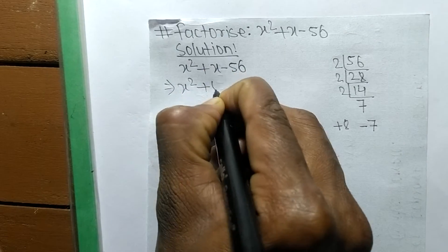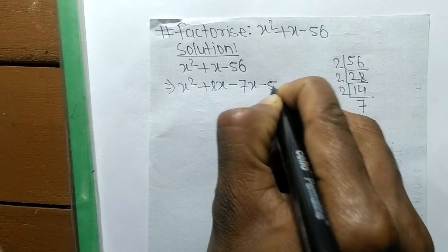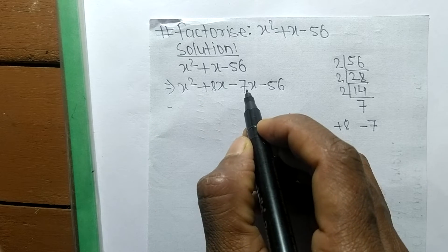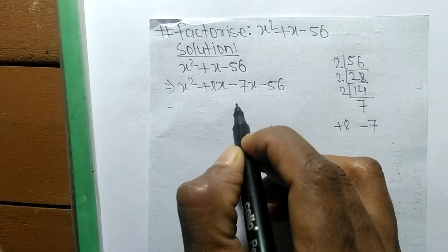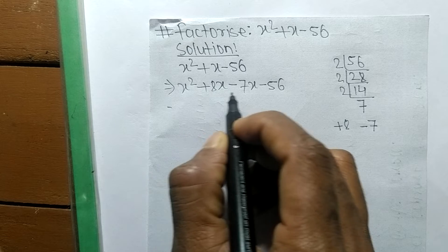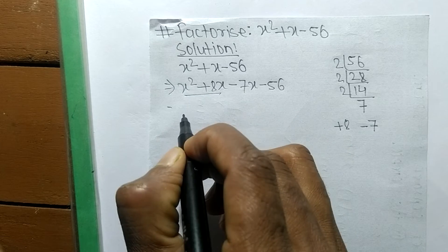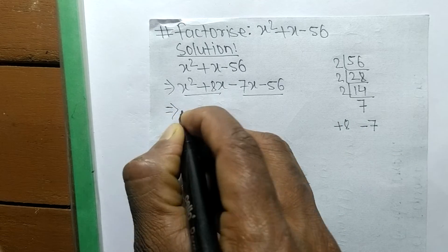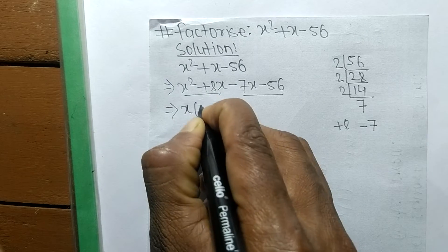So we can write it as x squared plus 8x minus 7x minus 56, because plus 8x minus 7x equals plus x, and 8 times 7 equals 56. Now we divide these expressions into two pairs — the first pair and the second pair.